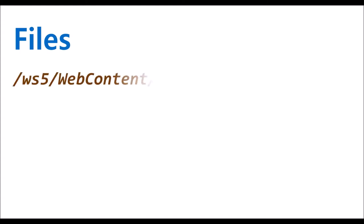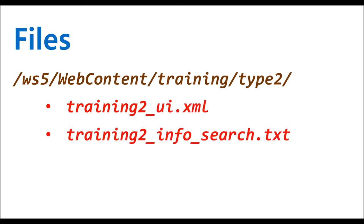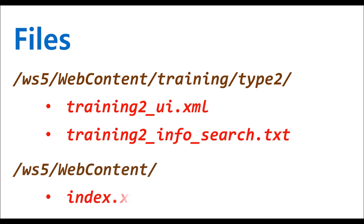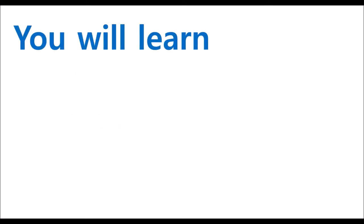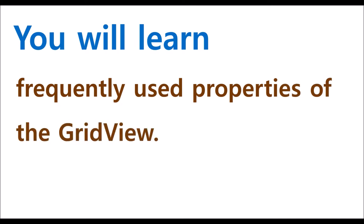The files we are going to use are located at WS5, Web Content, Training, Type 2. Use Training to UI XML, and Training to Info Search Text File. In addition, use Index XML File under WS5, Web Content. We are going to check the major properties of the grid view, one of the main components of WebSquare 5.